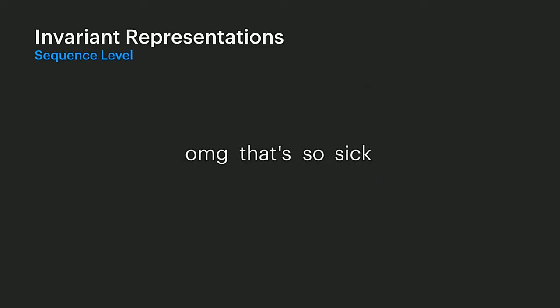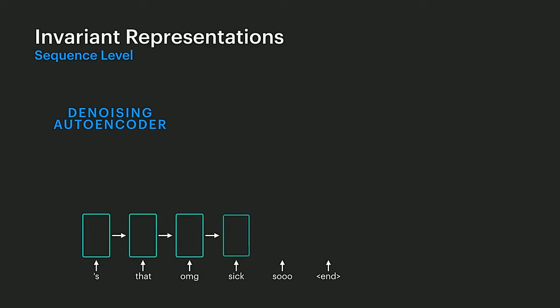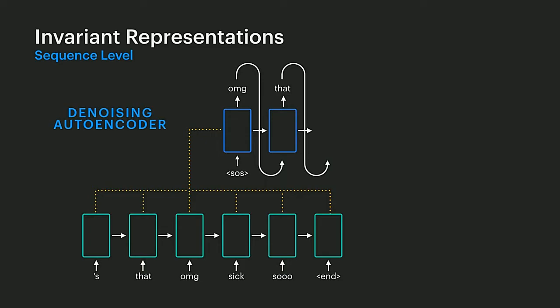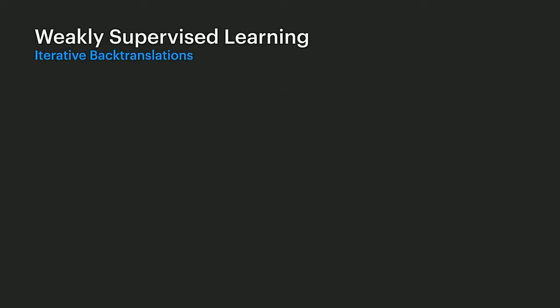Similarly, we can learn invariant representations for entire sentences. To do that, we design tasks for the neural network to learn from. One simple yet effective task is self-reconstruction. Given a sentence, we first corrupt it — such as scrambling it, changing the word order, or changing some letters — and then train a denoising autoencoder to reconstruct it. Specifically, we feed the input to an encoder network, which generates hidden representations, and then a decoder network takes context from the encoder output via an attention mechanism and tries to reconstruct the original sentence. By doing so, the encoder-decoder network focuses on the high-level abstract meaning while not being sensitive to input variations. The good news is that such a task does not require any labeled data — we can just use a bunch of unlabeled data. This is an example of weakly supervised learning, a very powerful paradigm for dealing with the dynamic nature of language.